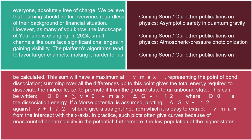If a Morse potential is assumed, plotting ΔG(v+1/2) against v+1/2 should give a straight line, from which it is easy to extract v_max from the intercept with the x-axis.